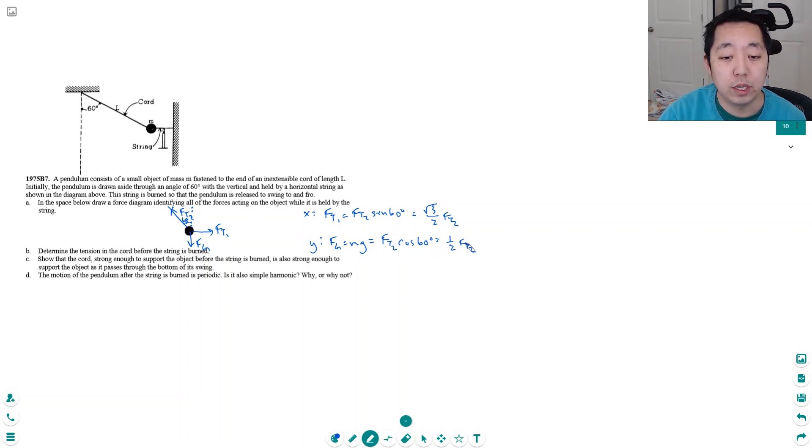I'm trying to find FT1. So FT2 from the second equation is equal to 2 mg, and I can plug it into the first equation to find FT1. FT1 equals root 3 over 2 times FT2, that's root 3 over 2 times 2 mg, which equals root 3 mg.